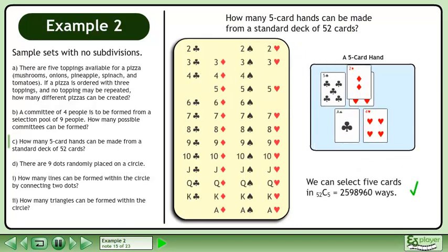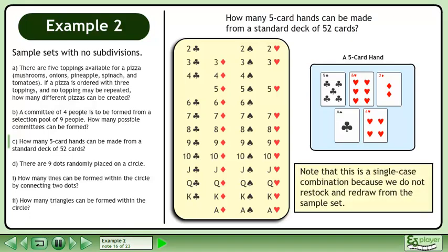We can select five cards in 52 choose 5 equals 2,598,960 ways. Note that this is a single case combination because we do not restock and redraw from the sample set.